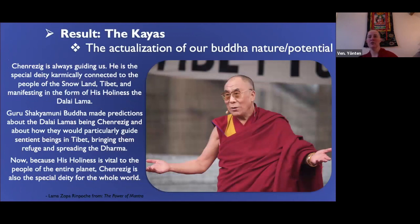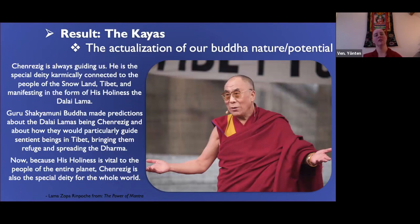Sometimes it sounds like we're already a buddha and just need to wake up to it — that's referring to the naturally abiding buddha nature. But we also need the developmental purity, developed through realizing emptiness. The actualization of our buddha nature in terms of an emanation body gives us people like His Holiness, whom we think of as Chenrezig, the Buddha of Compassion — always guiding us, the special deity karmically connected to the people of Tibet, manifesting in the form of His Holiness the Dalai Lama.